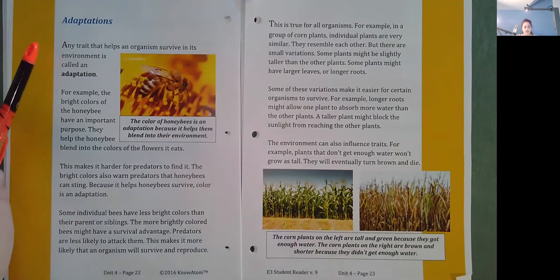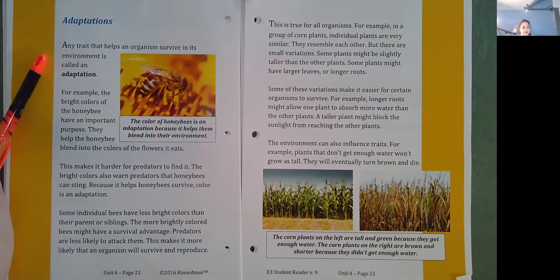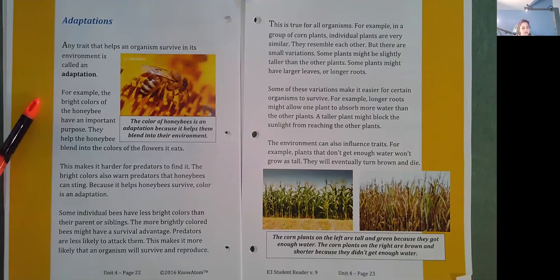Adaptations. Any trait that helps an organism survive in its environment is called an adaptation. For example, the bright colors of the honey bee have an important purpose. They help the honey bee blend into the colors of the flowers it eats. This makes it harder for predators to find it. The bright colors also warn predators that honey bees can sting. Because it helps honey bees survive, a color is an adaptation.